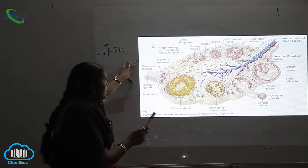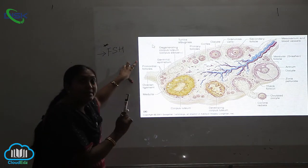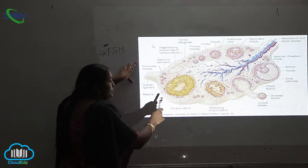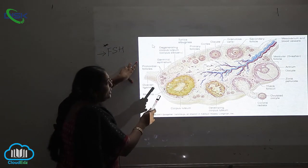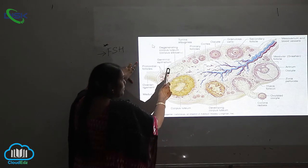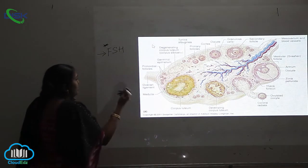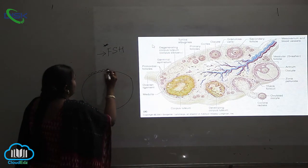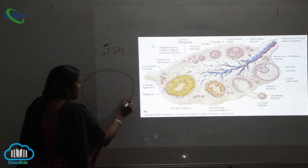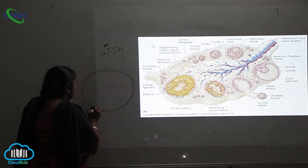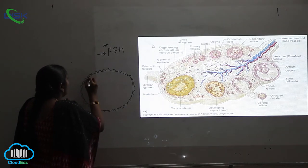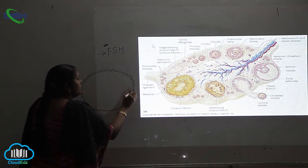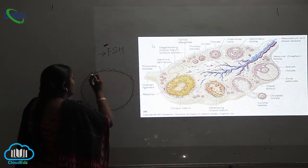Here you can see a clear picture of the transverse section (TS) of the ovary. It has a somewhat oblong or leaf-like shape. The outermost layer consists of scattered cells called the germinal epithelium, which forms the germ cells essential for the development of female gametes.